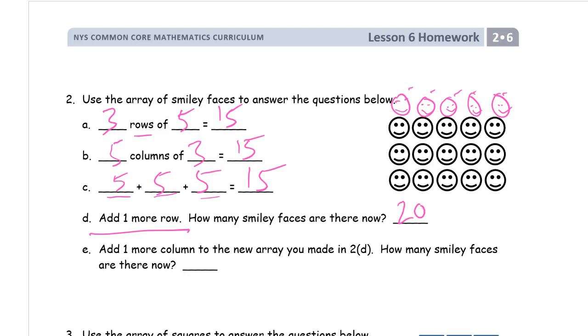Add one more column to this array. All right. So, we need another column. And each column has four in it. So, now there's four more because there's one more column, 24.